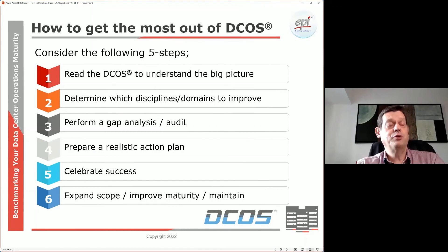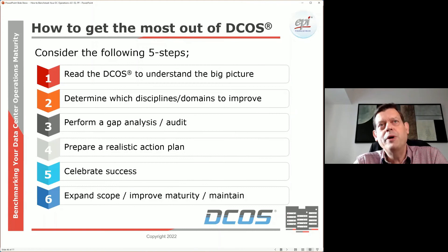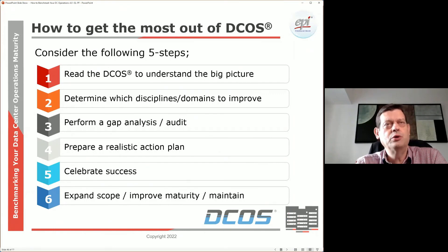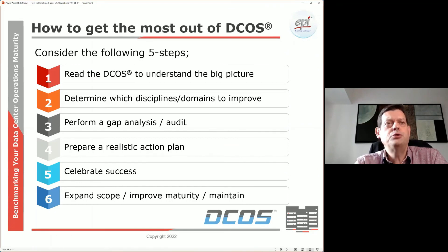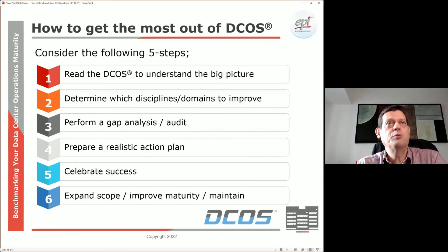The best way to get started is through simple steps: first, read the DCOS for a general walkthrough; then identify which domains are most relevant for improvement in your organization; check on the gaps either internally or using an external organization; make an action plan; celebrate success; and then over time maintain your relevance and compliance to DCOS, expanding scope or improving maturity, or simply keeping it at the level you deem appropriate.